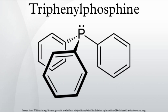Triphenylphosphine binds well to most transition metals, especially those in the middle and late transition metals of Groups 7 through 10. In terms of steric bulk, PPh3 has a cone angle of 145°, which is intermediate between those of P(C6H11)3 and P(CH3)3.